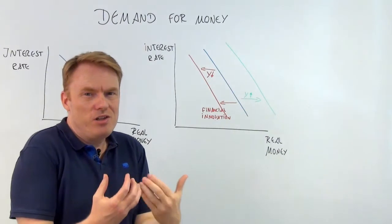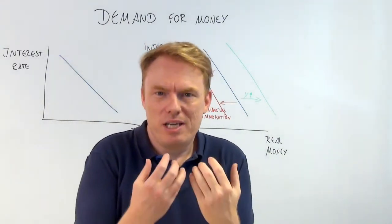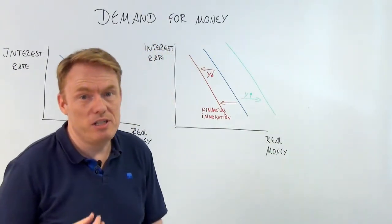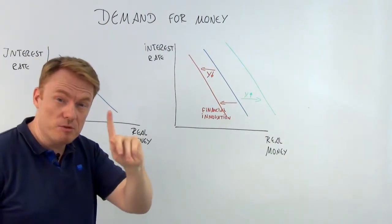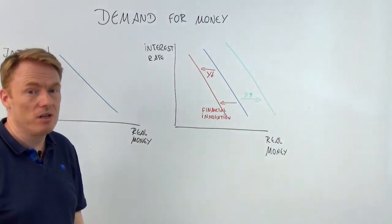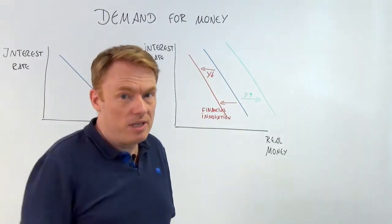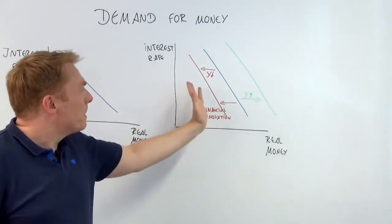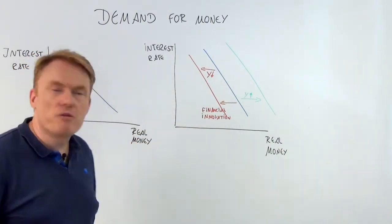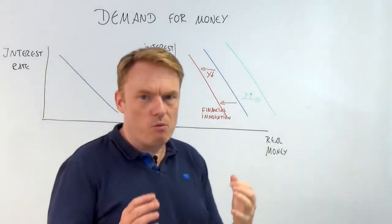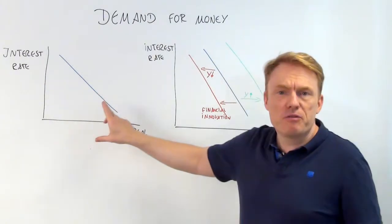Secondly, financial innovations. If there are financial innovations, you no longer need as high an amount of currency in your pocket — for example, if you can pay with credit cards. So financial innovation causes a movement to the left of the demand for money.